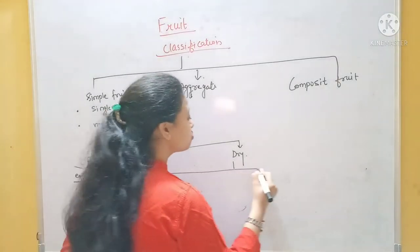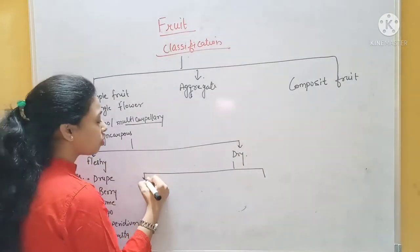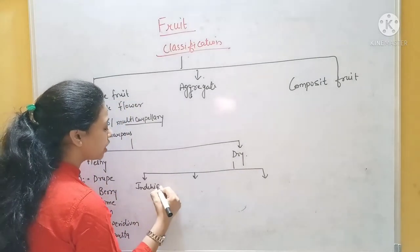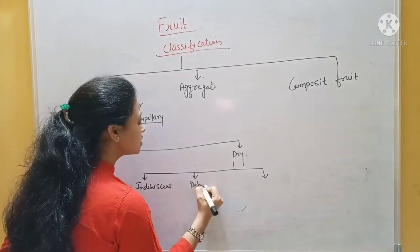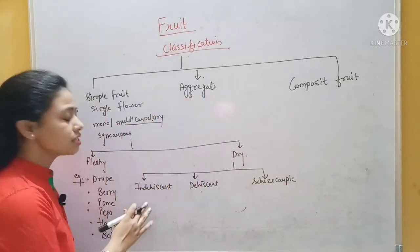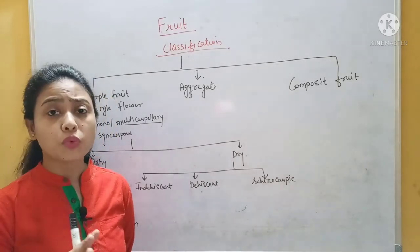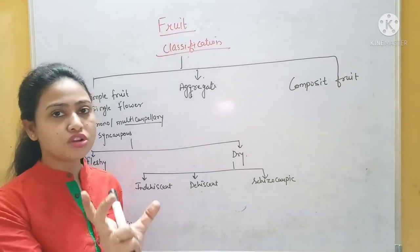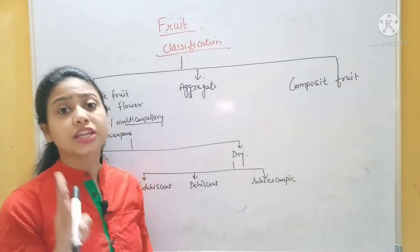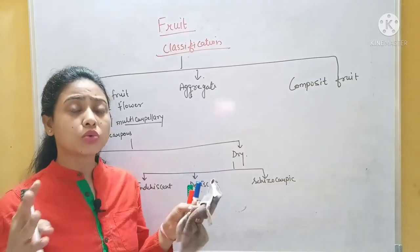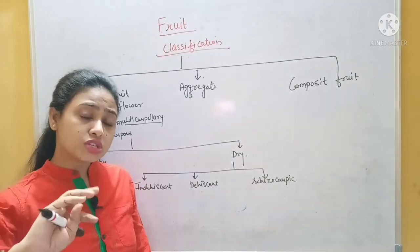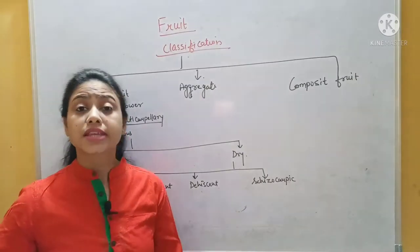Now let's talk about dry fruit. Dry means that it is dry. There are three categories. The first one is called indehiscent — when mature, the fruit does not split open and remains whole. The second is called dehiscent — when mature, it splits open. The third one is called schizocarpic — these are multi-seeded fruits that when mature split into individual parts called mericarps, from which seeds come out. That is called the schizocarpic fruit.